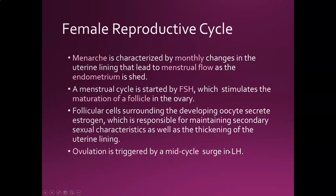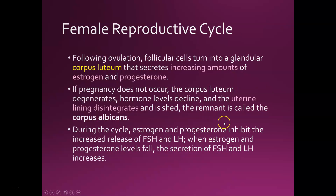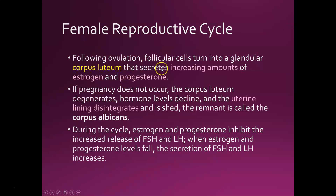Following ovulation the follicular cells turn into the corpus luteum, which starts secreting increasing amounts of estrogen and progesterone — actually more progesterone than estrogen at this point, because progesterone helps maintain that early pregnancy. We've just released the egg, so we want progesterone to maintain that uterine lining so pregnancy can happen. But if fertilization doesn't occur, the corpus luteum degenerates, hormone levels of estrogen and progesterone decline, and the uterine lining disintegrates and is shed — that's your period.